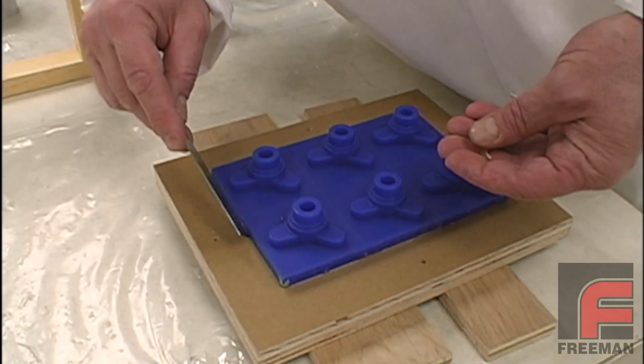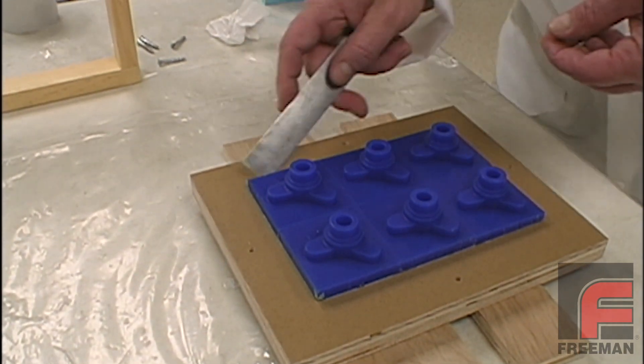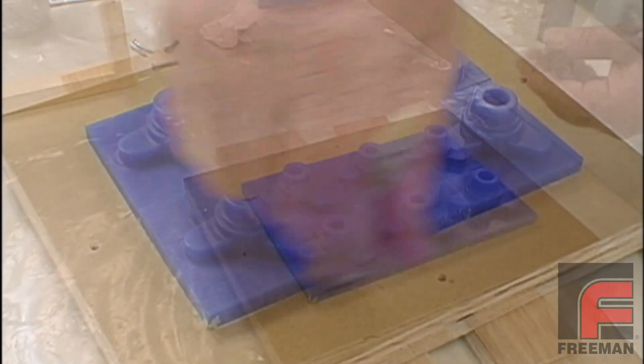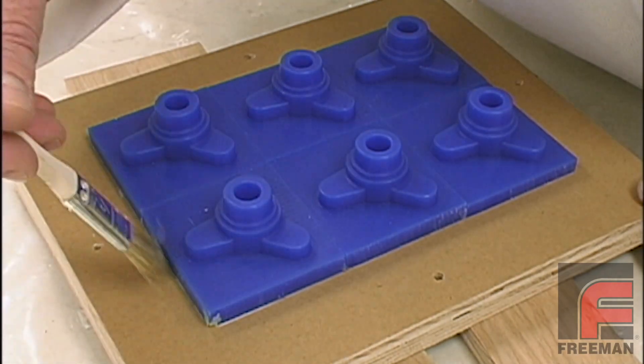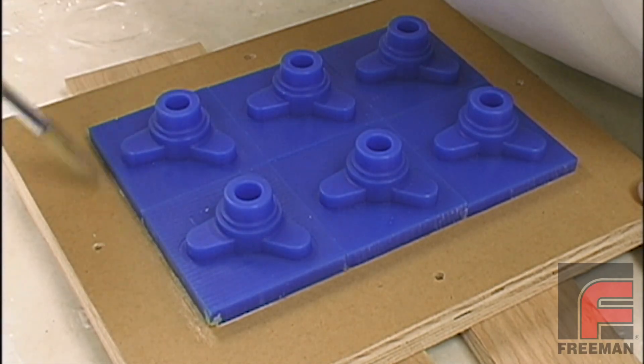Next, we remove the mold frame and trim the excess clay from around the edges, and then we apply a little wax release on the mold board. This wax release will remove any of the remaining excess clay.